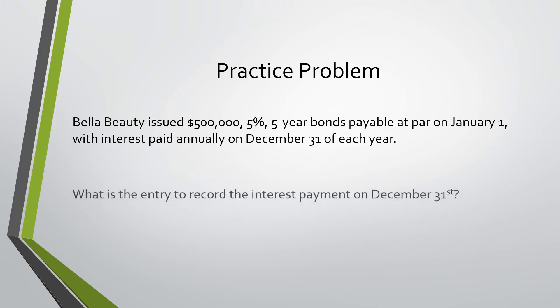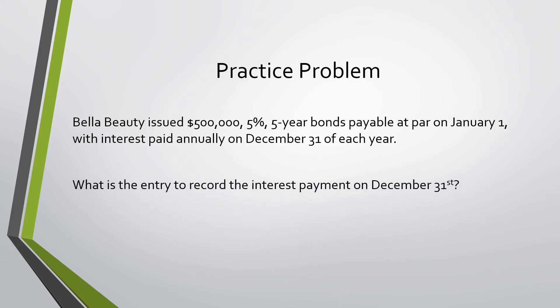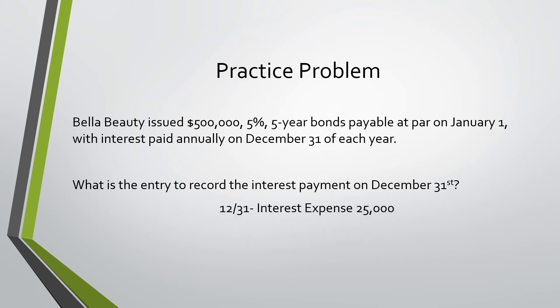In the same problem, the next question asks: what is the entry to record the interest payment on December 31st? We would debit interest expense for $25,000 and credit cash for $25,000. We got the $25,000 by doing 5% times $500,000, because they are paying annually and that's an annual interest rate — no conversions needed.